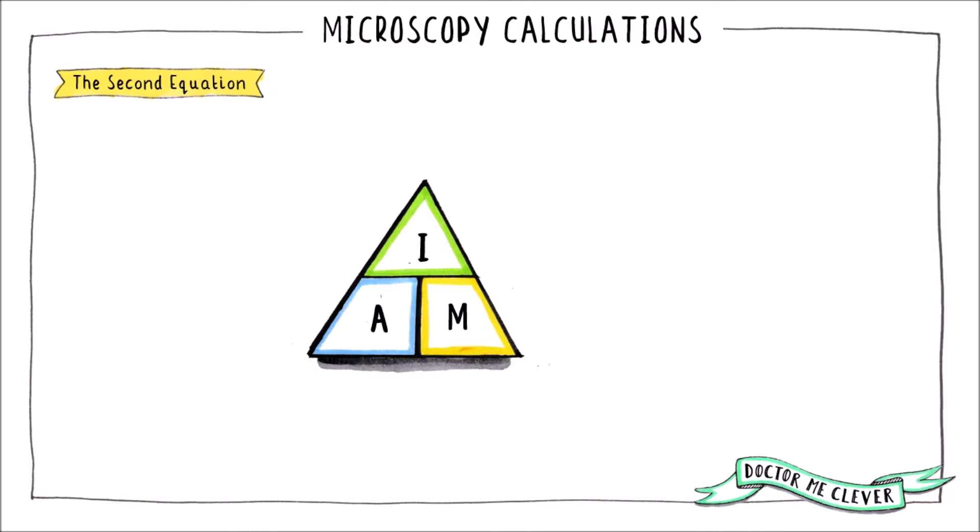Looking at the triangle, the I stands for the image size. This is the size of the image on your question paper. You often have to measure this yourself so make sure you have a ruler that measures millimetres with you in your exam. The units of the image size will most likely be millimetres or centimetres.